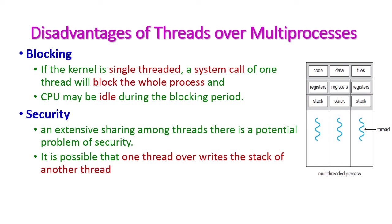Now let us see the drawbacks of threads over multiprocessing. The first drawback is blocking. If the kernel is single-threaded and a system call comes for a particular thread, it will block the whole process. During that blocking period, the CPU will be idle and wasted.